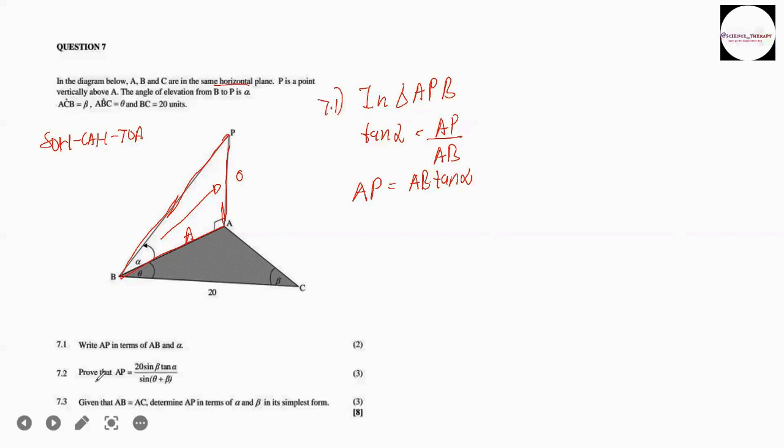Now, 7.2 says prove that AP is 20 sin beta tan alpha over sin theta plus beta. Remember, we are still within the strategy that says that we must look for the common side in between the given triangles. Right, so the other triangle that we are given is triangle ABC, and then, as we can see here, the common side is AB. So in all these expressions, we should try to have AB. We already have AB from triangle APB. That means we must also try to express in terms of AB in triangle ABC.